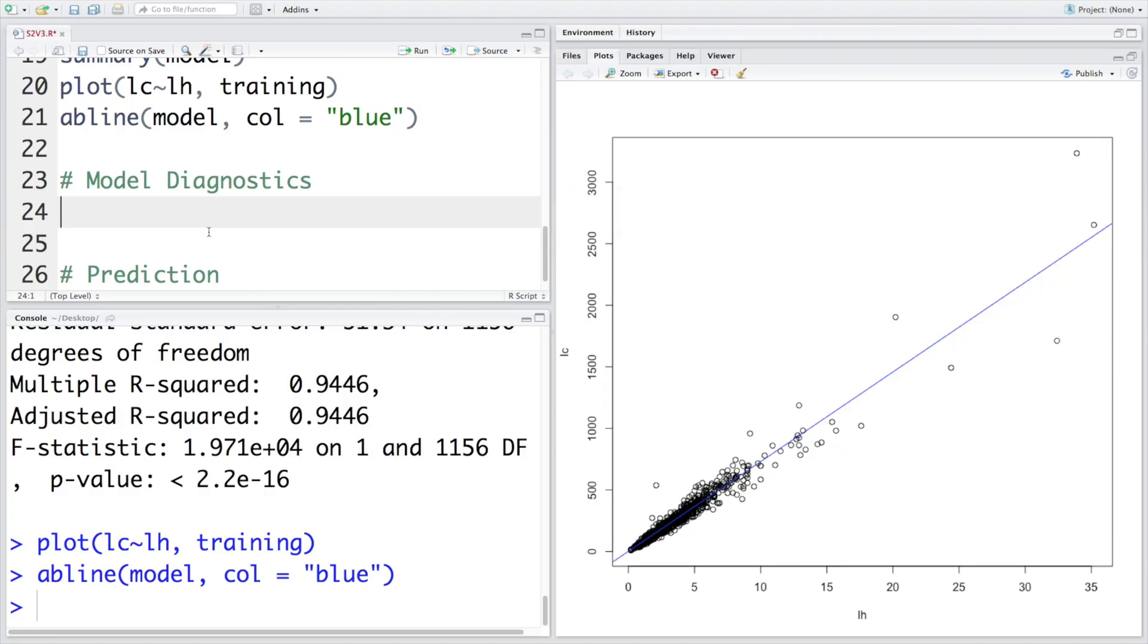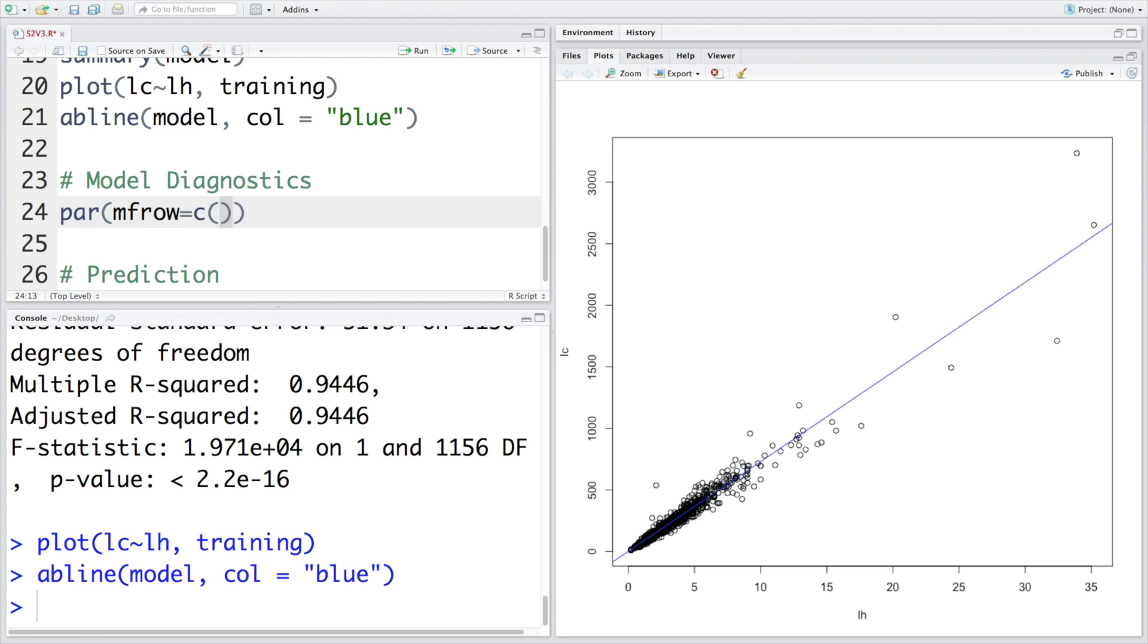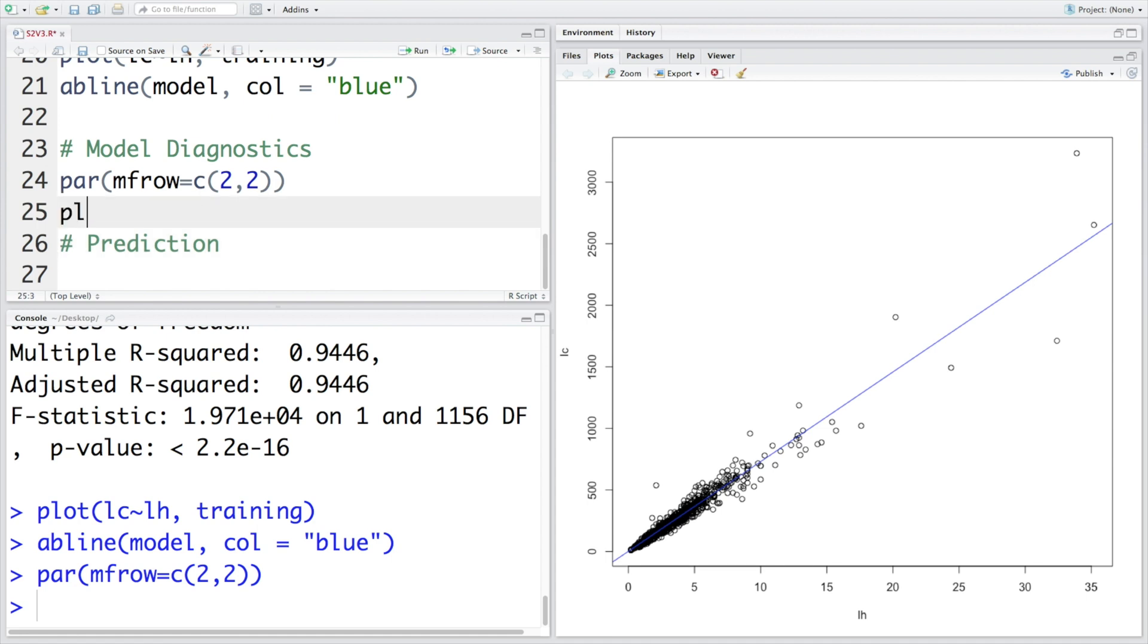Because we'll have many plots, I'm going to use PAR. We'll make two by two plots. We'll have two plots each in two rows. And then we plot the model.